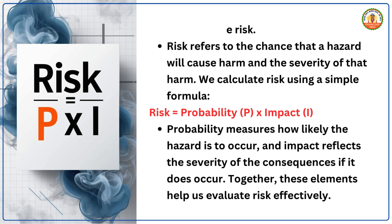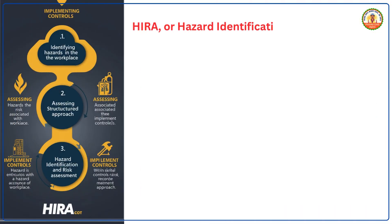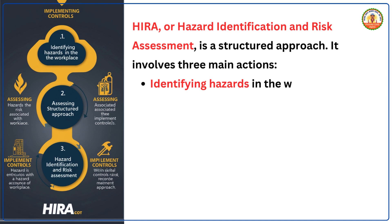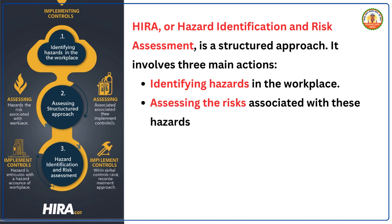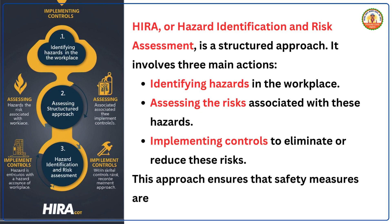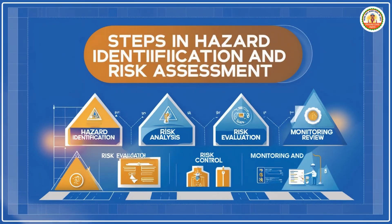What is HIRA? HIRA, or Hazard Identification and Risk Assessment, is a structured approach. It involves three main actions: one — identifying hazards in the workplace; two — assessing the risks associated with these hazards; and three — implementing controls to eliminate or reduce these risks. This approach ensures that safety measures are planned and effective.